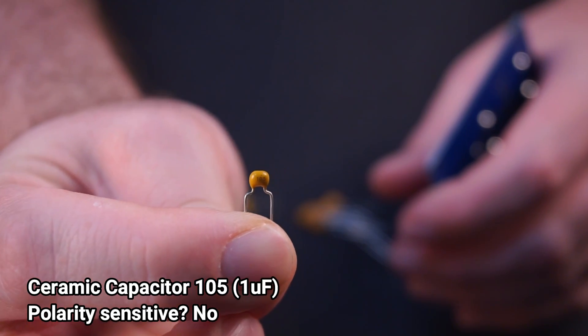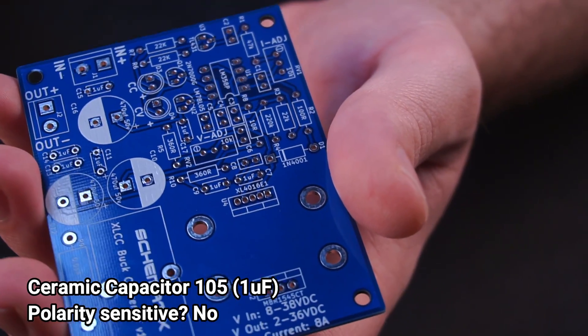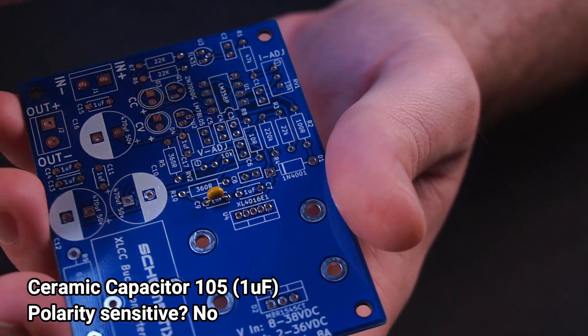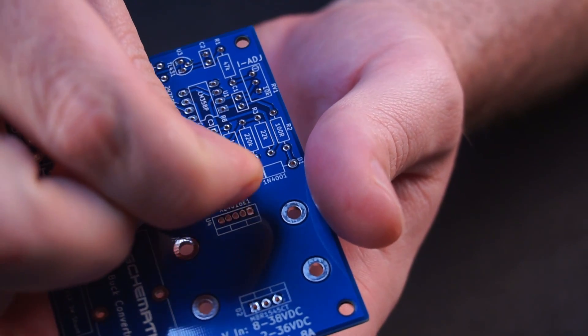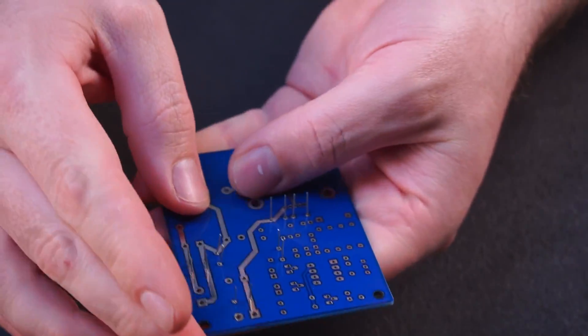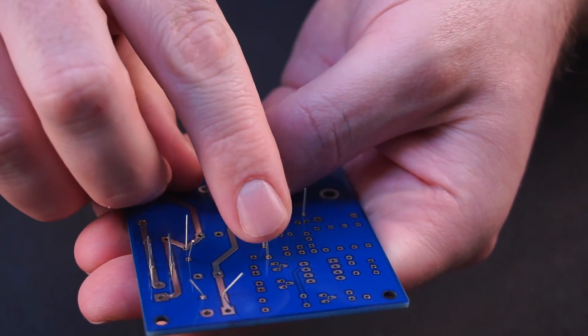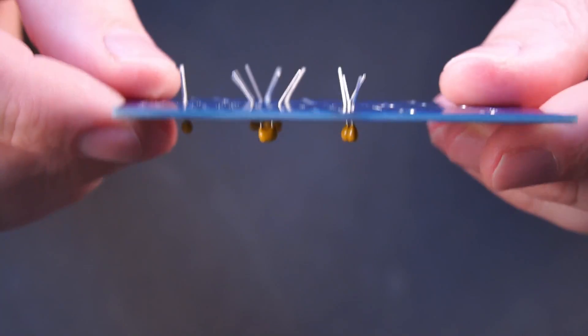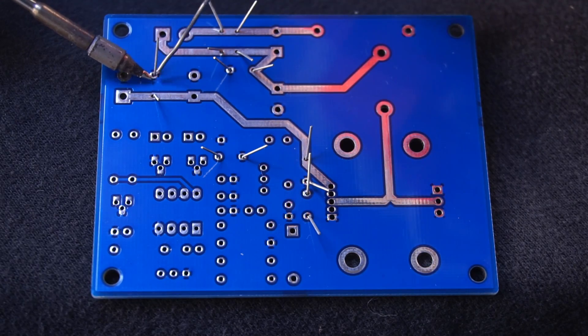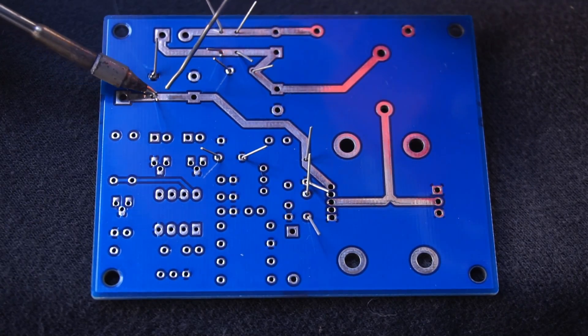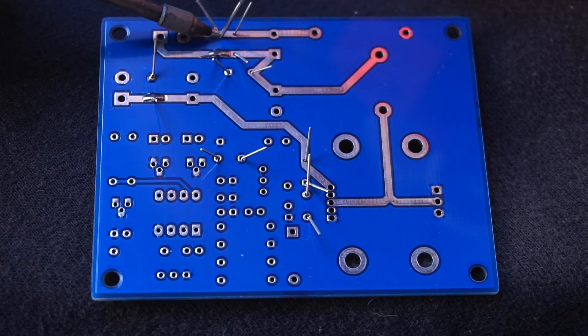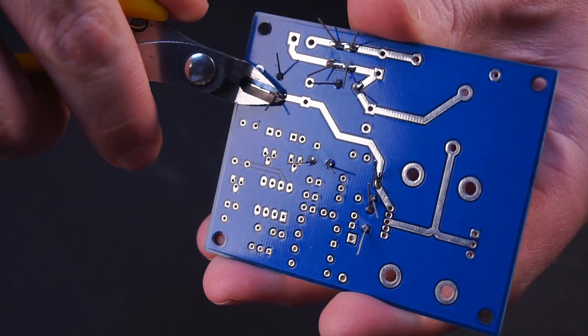These ceramic caps are 1 microfarad and they are installed on the board wherever you find a 1 microfarad label. After installing all the 1 microfarad caps you can carefully flip the board over and bend the wires slightly to prevent the caps from falling out before soldering. Now we can solder the caps to the board. Be sure to use a quality flux core solder. Using a poor quality solder can at times fail to wet the connections properly, leading to failure. Now we can snip off the excess wire.